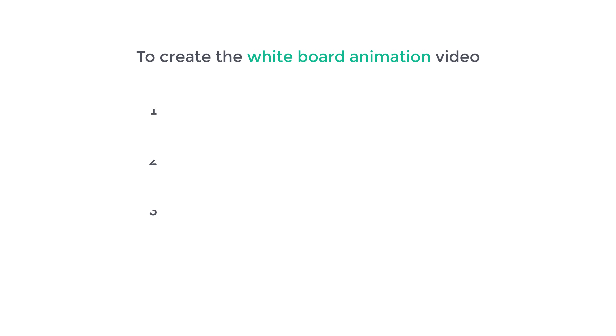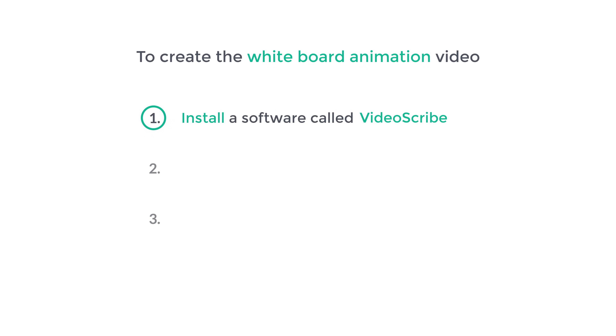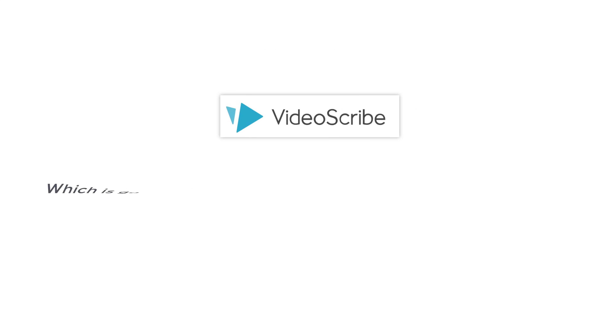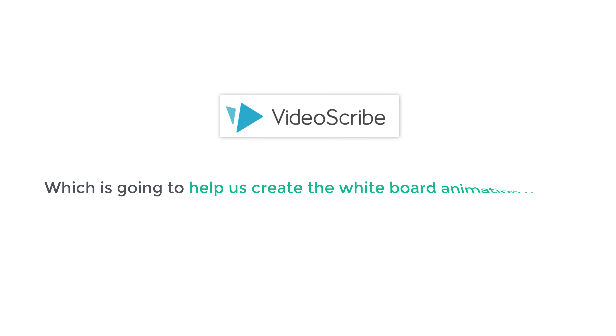I'm Brian from Upstate Learners and let's start creating our animation video. To create the whiteboard animation video, we are going to do three steps. The first step is to install a software called VideoScribe. This is the software which is going to help us create the whiteboard animation video.